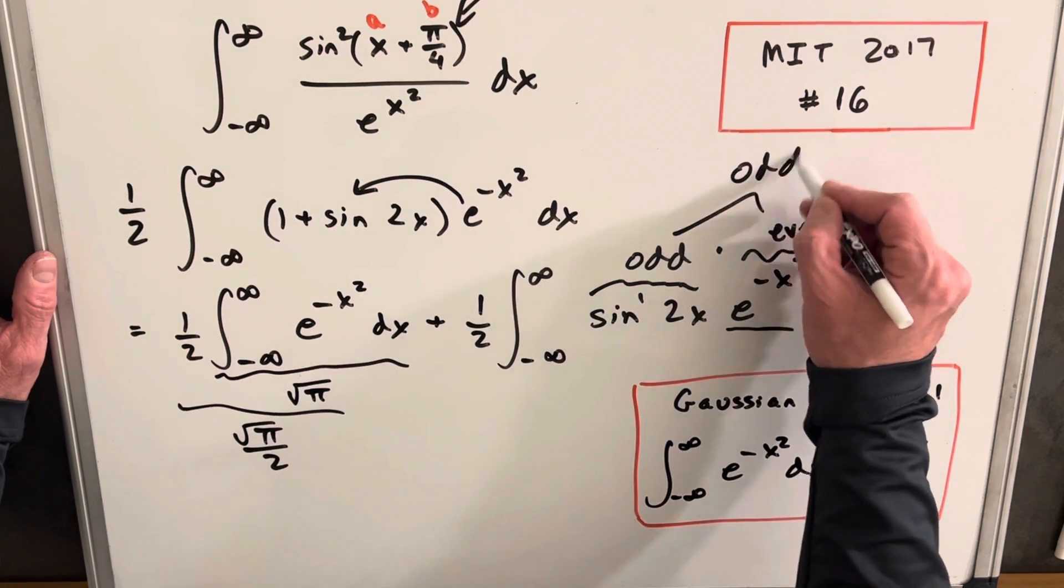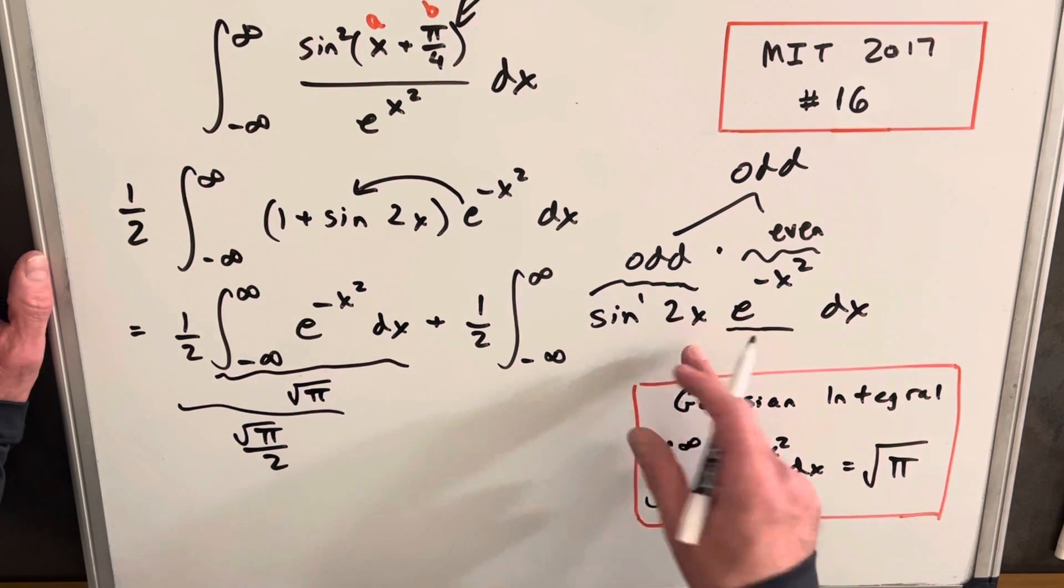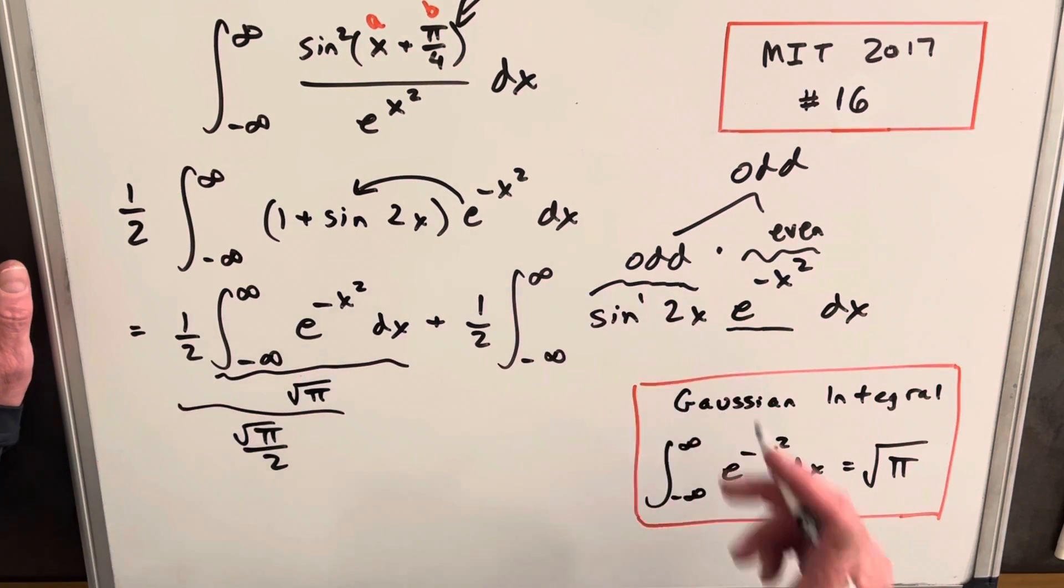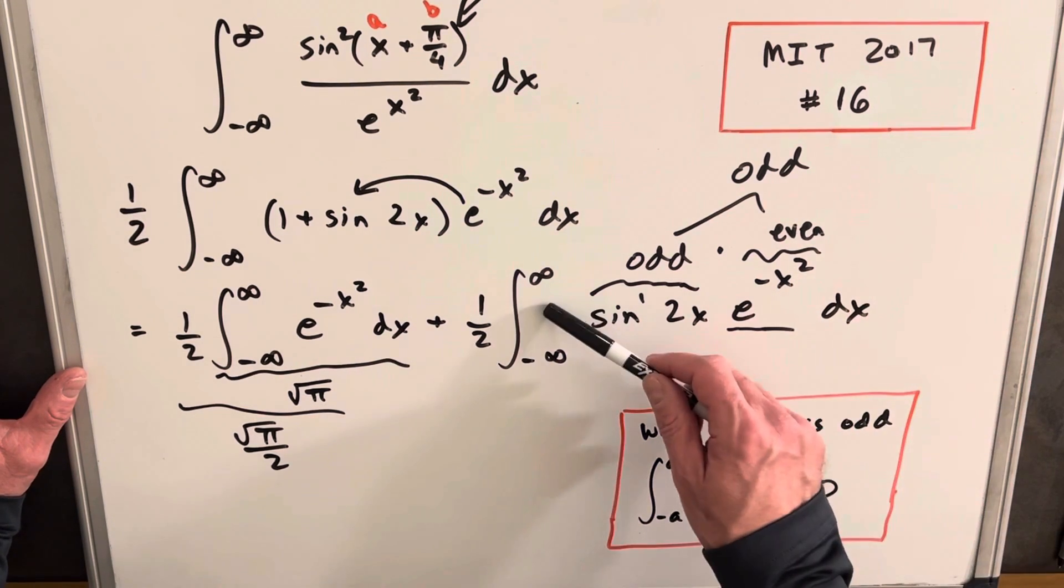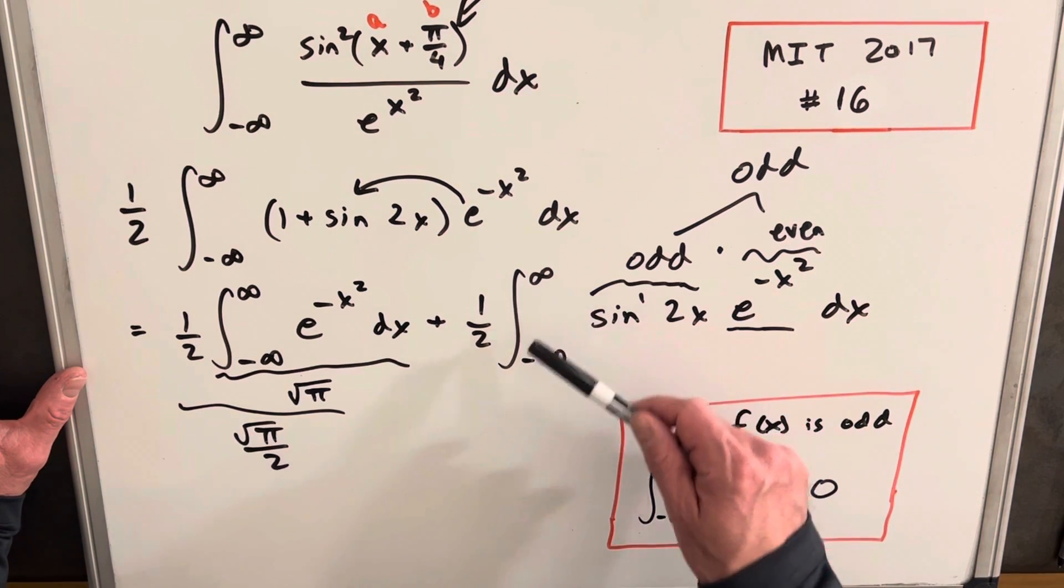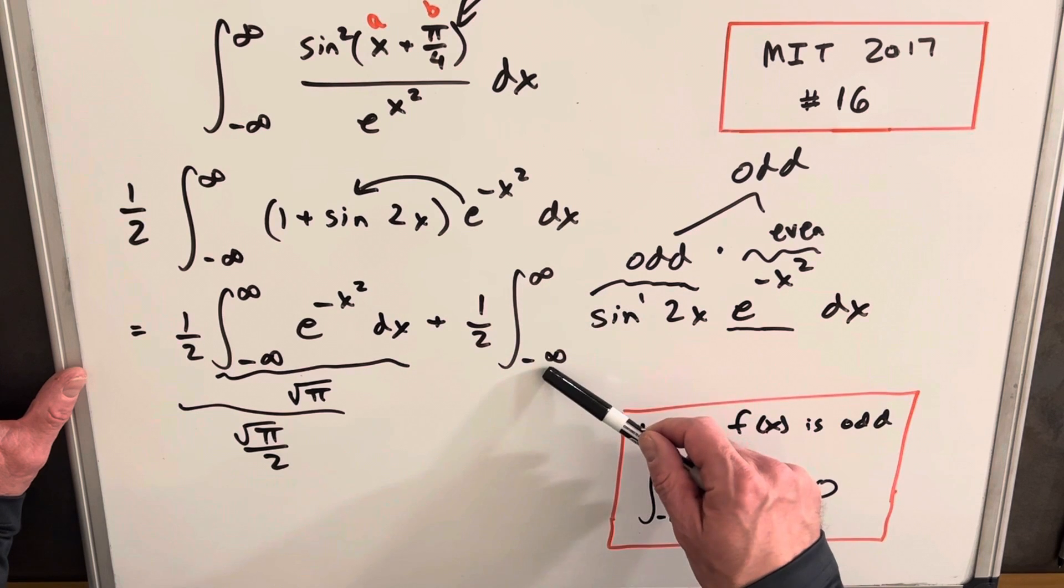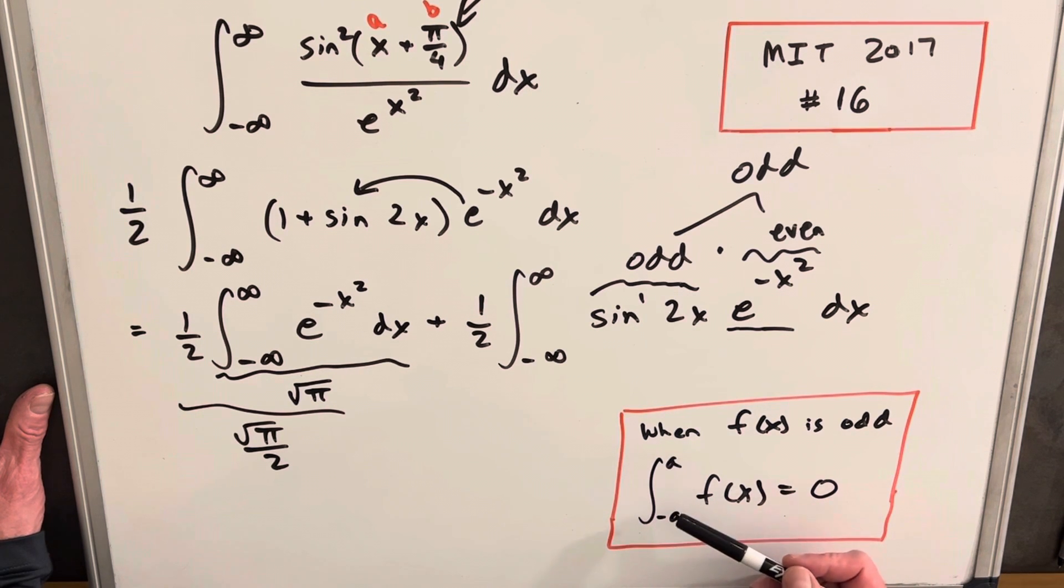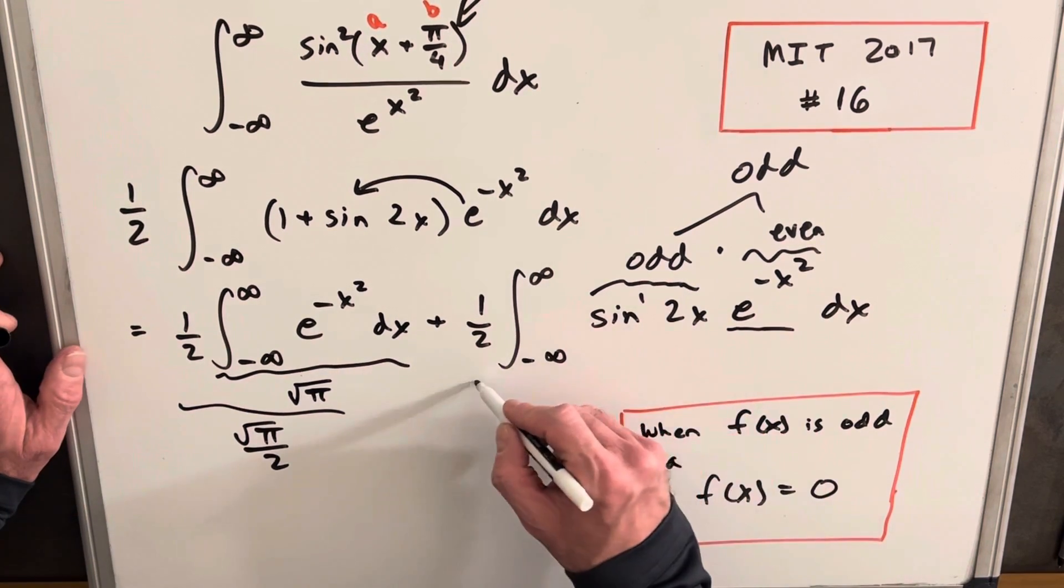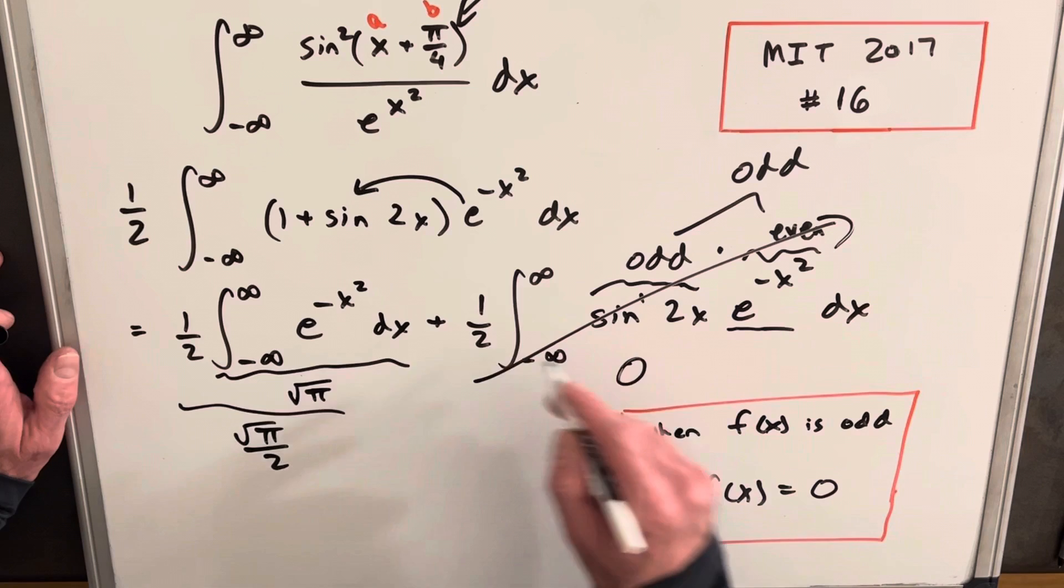And it turns out the product of an odd and even is gonna be odd. And you could again verify that by putting in a negative value and seeing you get back the negative of the full expression. But because this is odd and our bounds are actually—they're not the same but they're the negative of the top bound—we can use this formula here. When f of x is odd and our boundary is symmetrical, then we just know the whole integral is going to be zero. So we'll use that here: this whole thing is going to be zero, zero times half is zero.